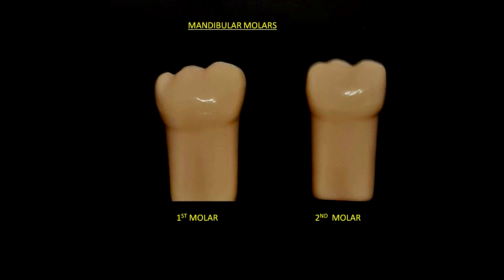Here we have a picture of the mandibular molars. Similar to the maxillary molar, the third molar is very difficult to identify due to its high variability. Therefore, let's focus on the first and the second molar. We can easily identify the first mandibular molar because by the buccal view it contains two developmental grooves. Thus, the first mandibular molar contains three cusps by the buccal view: the distal cusp, the distobuccal, and the mesiobuccal. To identify the right from the left first mandibular molar, we have to look for the size of the cusps. The cusp which is smaller is the distal one.